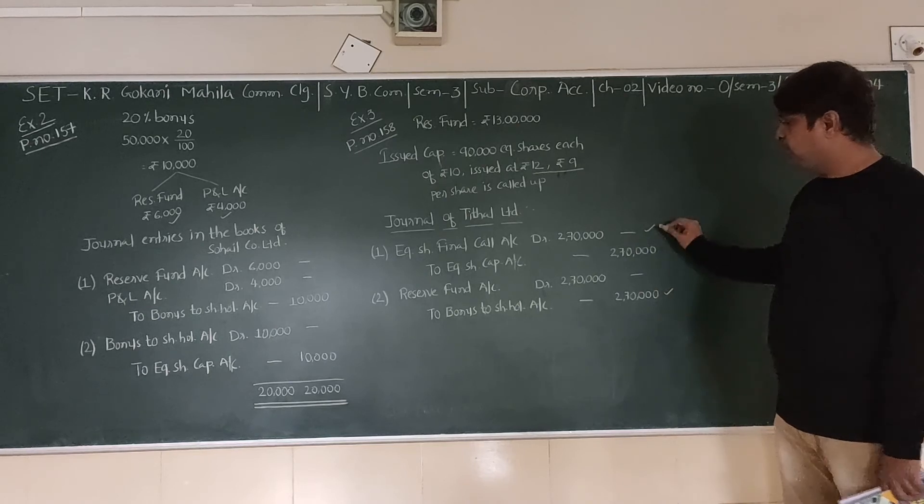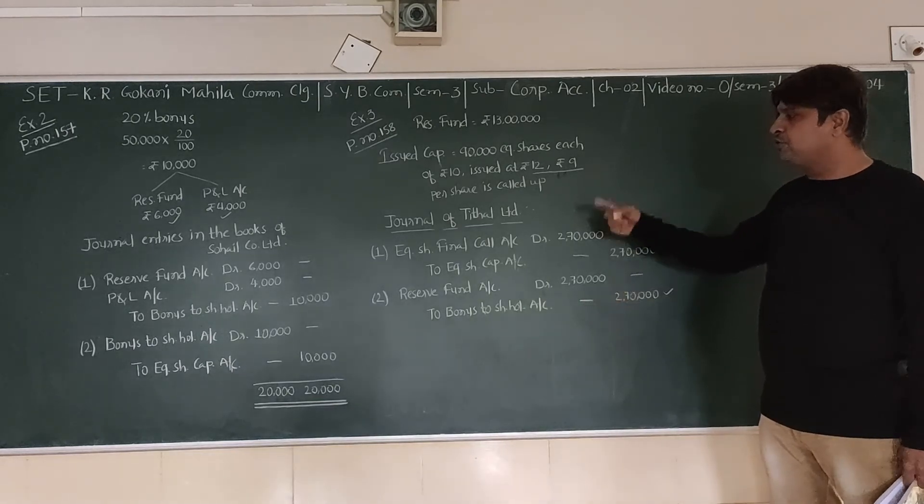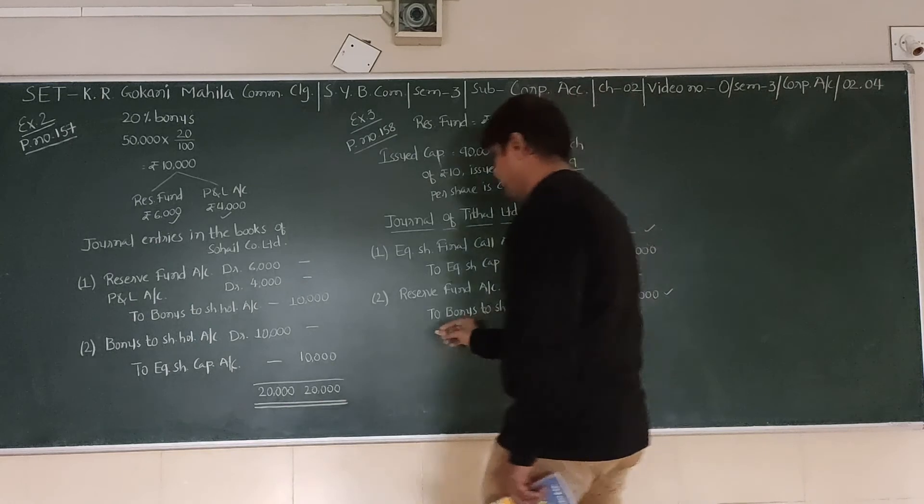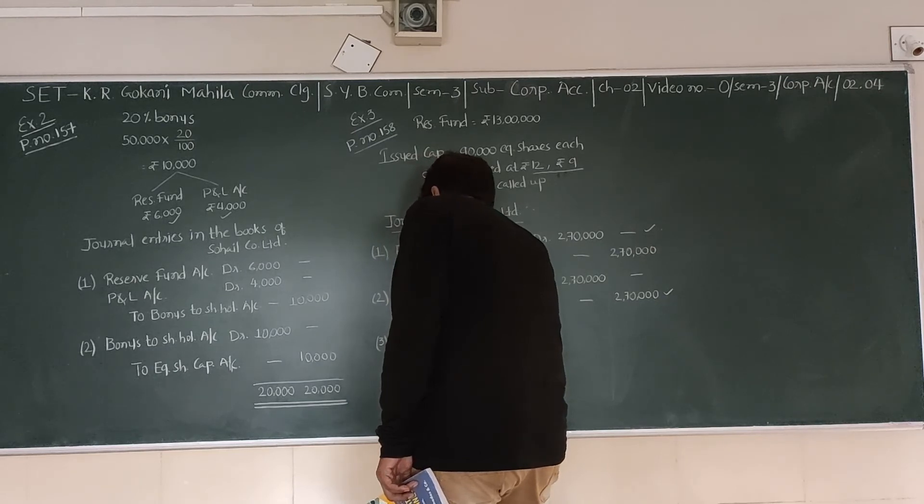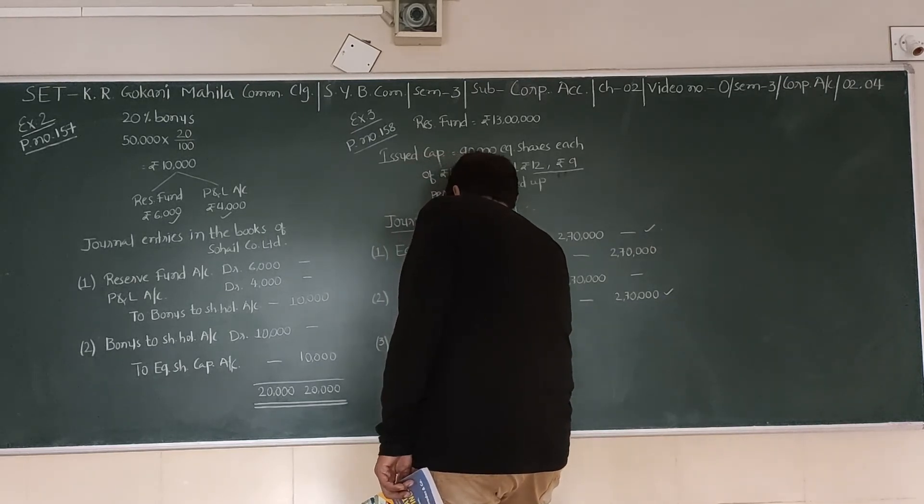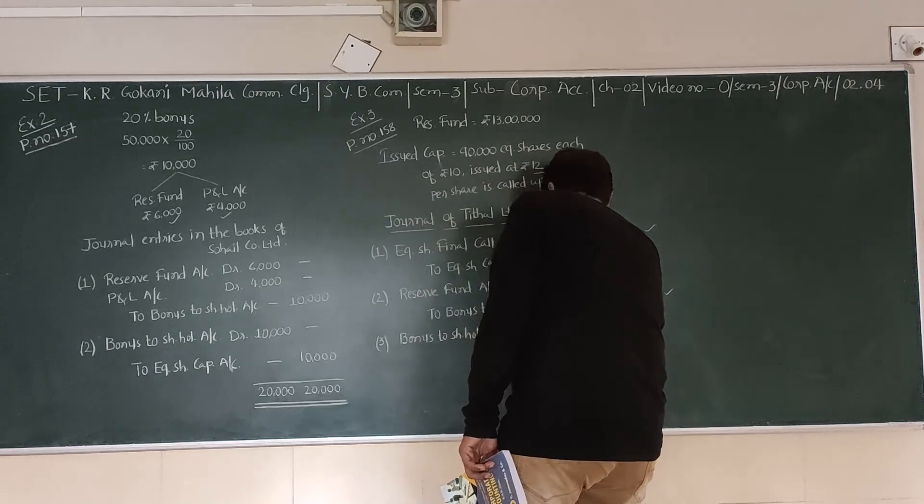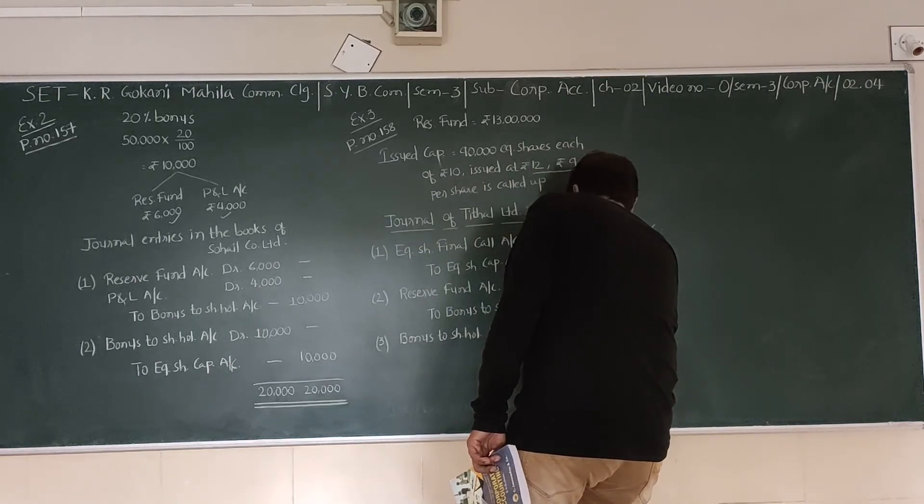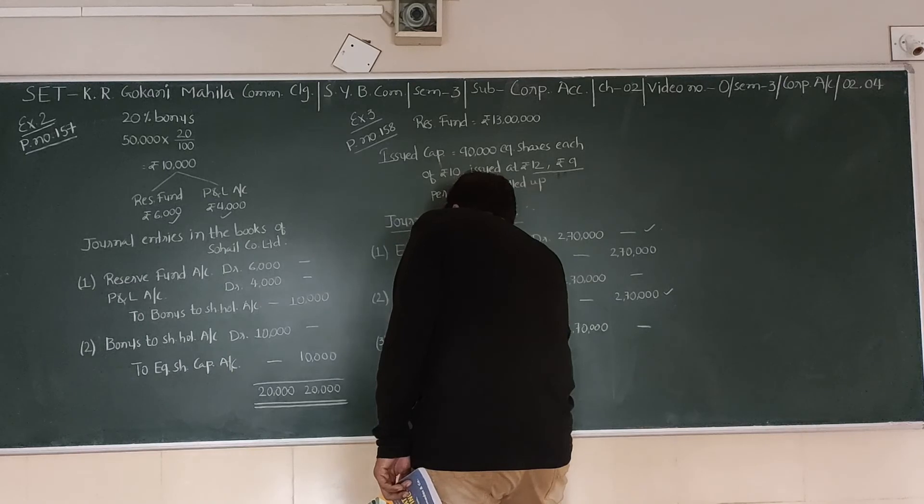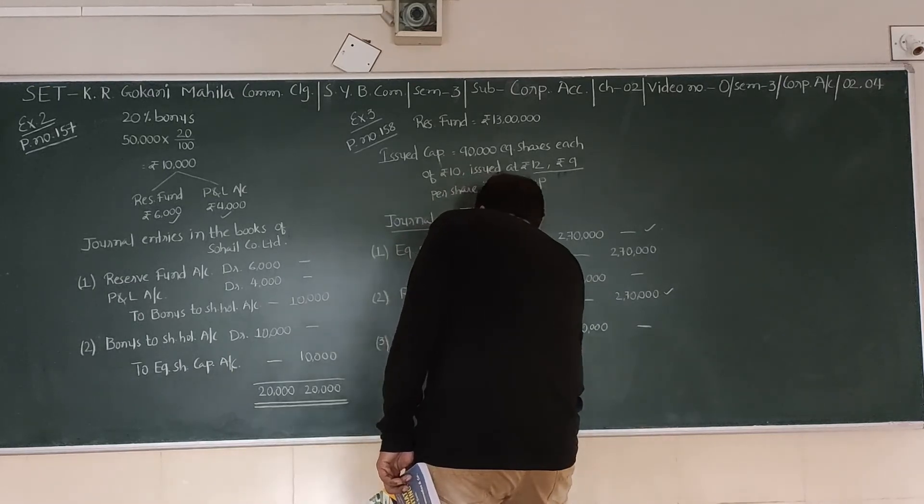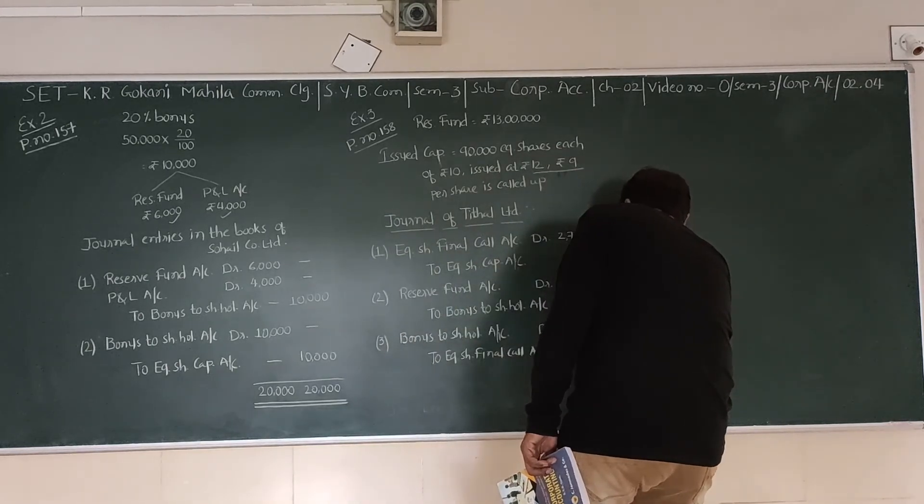These are temporarily passed and should be closed. Final Call and Bonus to Shareholders accounts are interchangeably closed. So third entry will be Bonus to Shareholders account debit 2,70,000 to Equity Share Final Call account credit 2,70,000. So your partly paid-up shares are now fully paid.